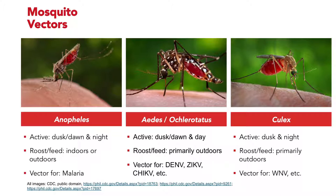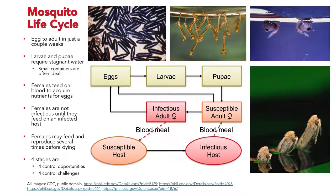The Aedes mosquitoes were once endemic to Africa and Southeast Asia, but Aedes aegypti has since moved to the tropics of Central and South America and other parts of the world, and Aedes albopictus has moved to parts of North America and Europe. The Culex mosquitoes are active mostly during dusk and they transmit West Nile virus and a host of other arboviruses, and again these are found worldwide.